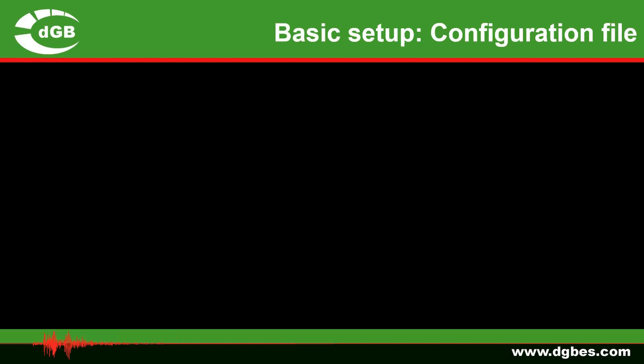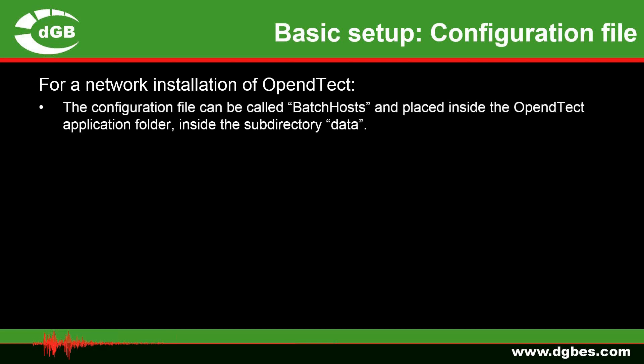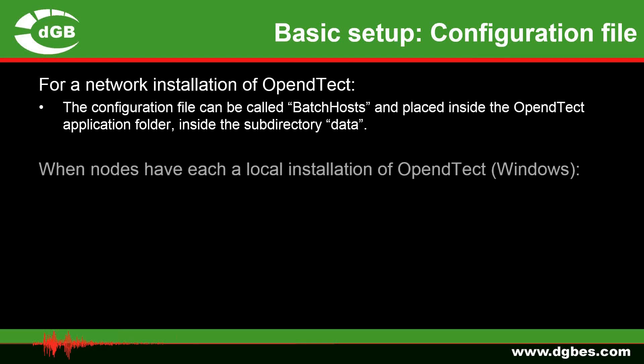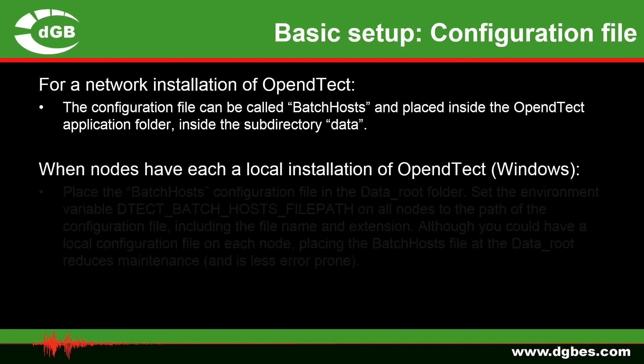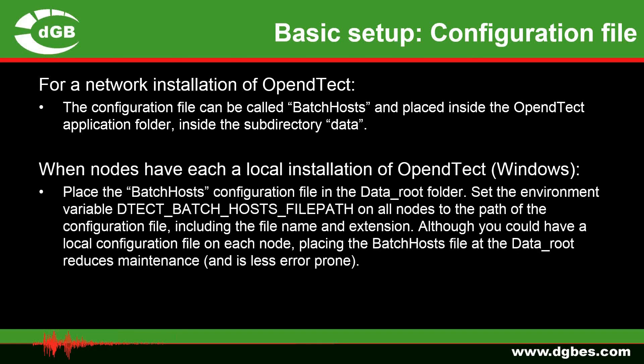We're looking at the configuration or batch host file. For a network installation of OpenDTec, the configuration file can be called batch host and can be placed inside the OpenDTec application folder, inside the sub-directory data. Or when nodes each have a local installation of OpenDTec, i.e. on Windows nodes, then place the batch host configuration file in the data route folder and set the environment variable DetectBatchHost's file path on all nodes to the path of the configuration file, including the file name and its extension — it's very important that you have the full path. Although you could have a local configuration file on each node, placing the batch host file at the data route reduces maintenance and is less prone to error.